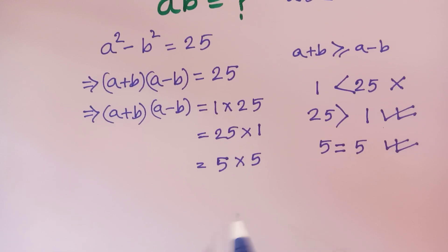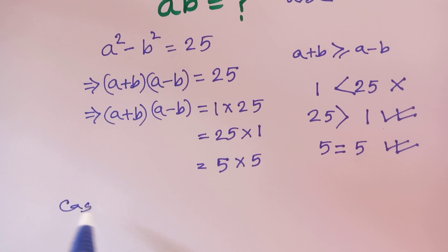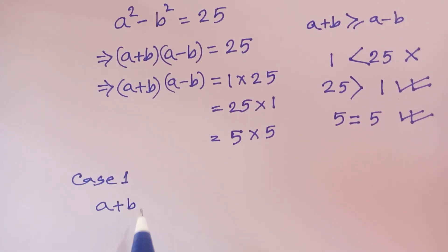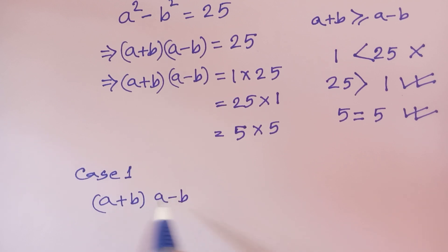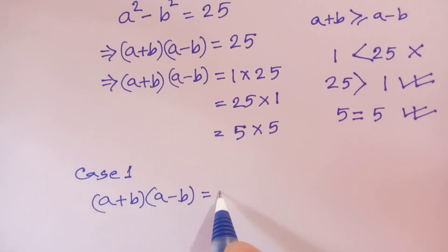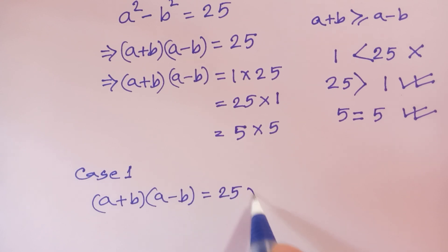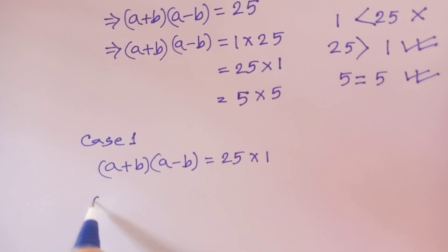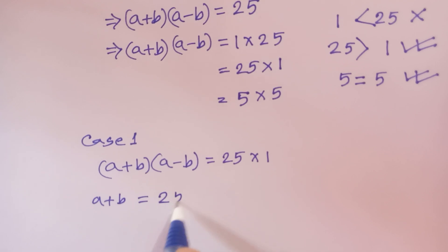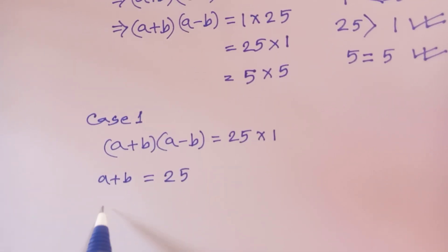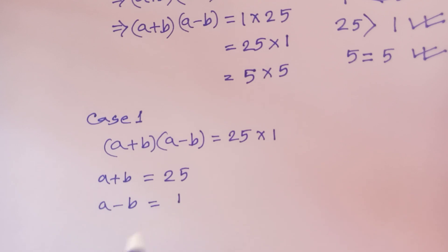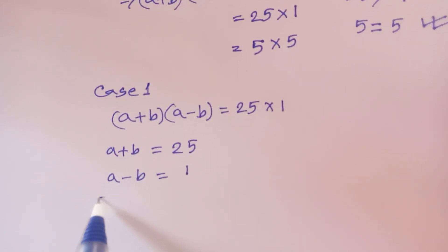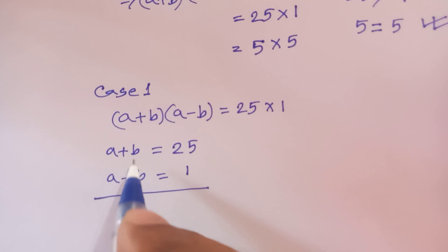There are two solution cases. Case 1: (a plus b) times (a minus b) equals 25 times 1. We have two equations: a plus b equals 25, and a minus b equals 1.